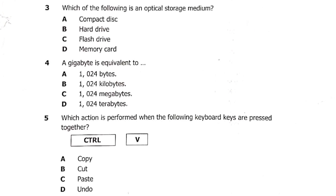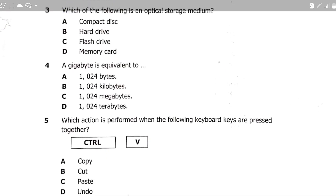Question 3: which of the following is an optical storage medium? Is it A: a compact disc, B: hard drive, C: flash drive, or D: memory card? An optical storage medium is a compact disc, so A is the answer.